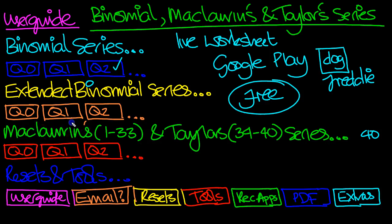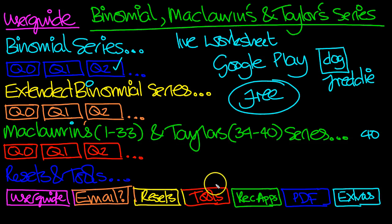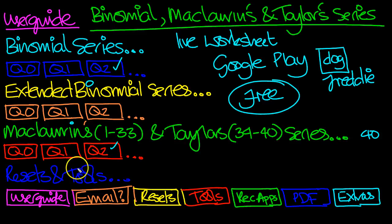We go on in the third row to Maclaurin's and Taylor's Series. Again, there's an intro to give you the standard bookwork. We start off gently to make you feel comfortable with the subject, and then the level of difficulty generally increases as the questions continue. When you click on a question and look at the video solution, it marks a tick on the question just to keep track of your progress. You can reset any particular row or reset all, so that you can have a fresh go.